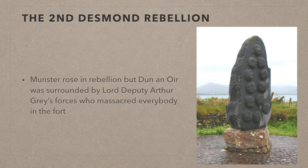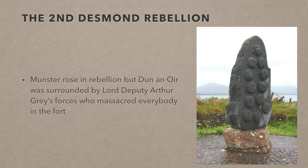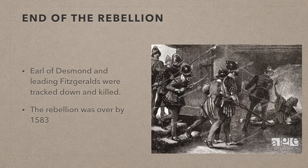The rest of Munster rose in rebellion upon the arrival of these troops. However, the fort was surrounded by English troops who had heard of the coming of the Pope's forces. They were led by the Queen's representative, the Lord Deputy, a man named Arthur Gray, and they massacred everybody in the fort. Soon the Earl of Desmond and the leading Fitzgeralds were tracked down and killed, with the Earl's severed head being sent to the Queen. The second Desmond or Geraldine rebellion was over in 1583.